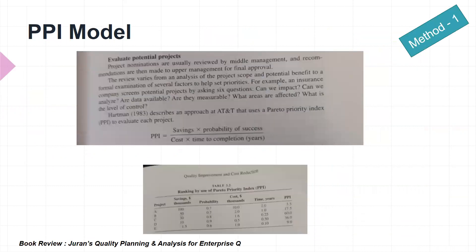The first method — PPI — says that whenever you want to do a project, there are four factors. In the numerator, you put savings multiplied by probability of success and your confidence level, divided by cost and time to completion.